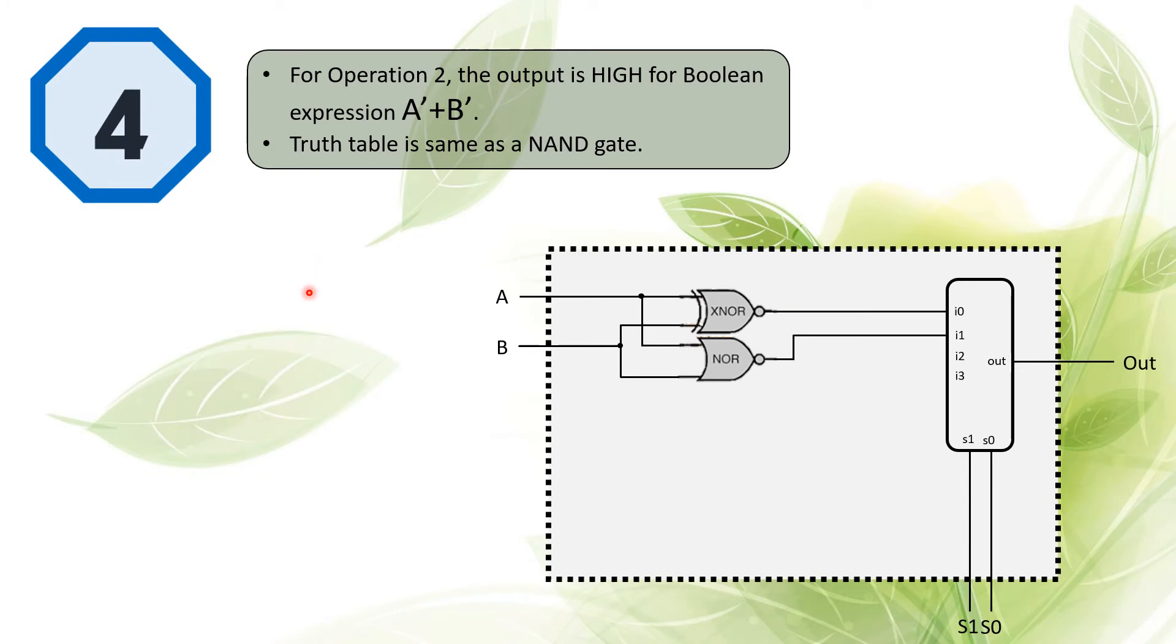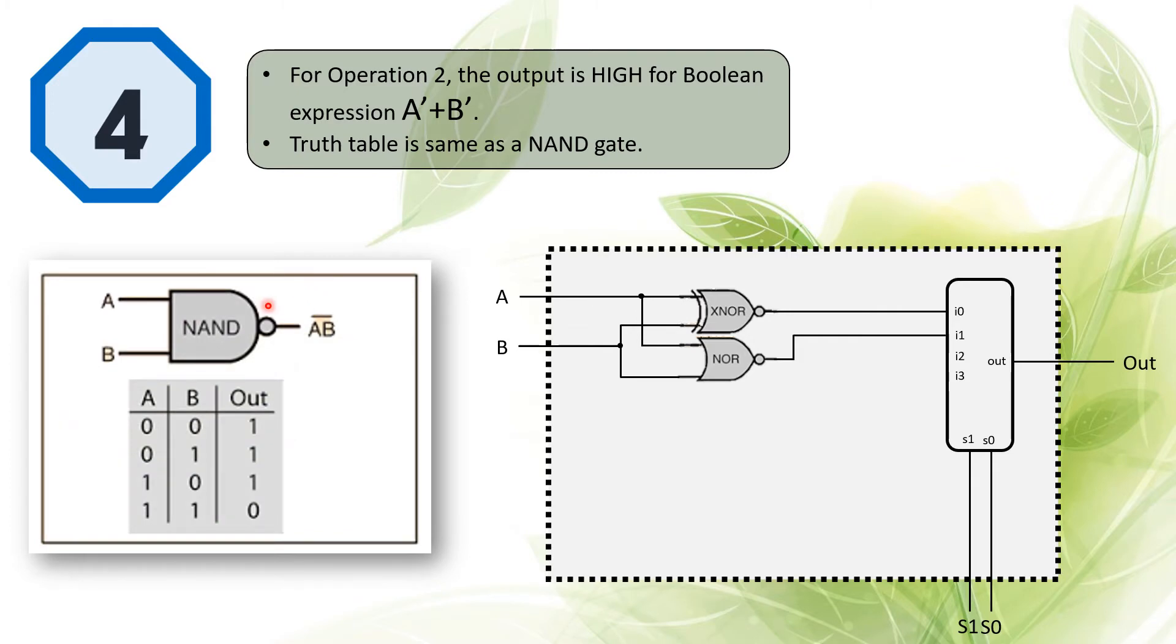The next operation, operation two, is to output a high signal for Boolean expression A bar or B bar, where the OR operation is represented by the plus sign. The truth table we found out is the same as the NAND gate. So we add one more NAND gate and get the output of the NAND gate into the I2 of the four-to-one multiplexer.